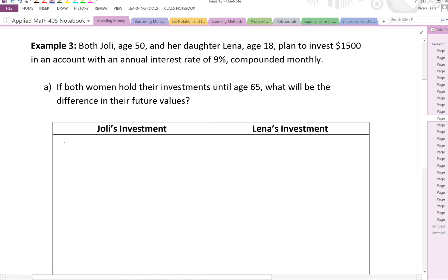So for Jolie, our time is going to be her age, subtracted from 65, because if both women hold their investments until age 65, what will be the difference in their future values? So if I take 65 minus 50, Jolie is only going to be investing for the difference there, which would be 15 years, where her daughter, because she's only 18, she'll be investing her money for 47 years. Just because they both want to invest until they're 65. So how does that affect our future value?